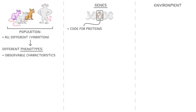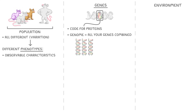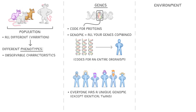Genes code for proteins, and a genome — which is all of your genes combined — codes for an entire organism. Apart from identical twins, everyone in the world has a unique genome, which means they have slightly different combinations of proteins inside them, and so they look different.